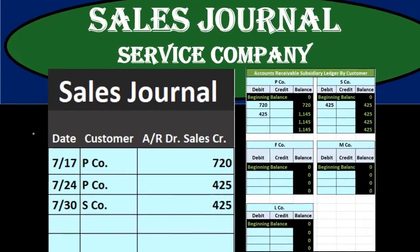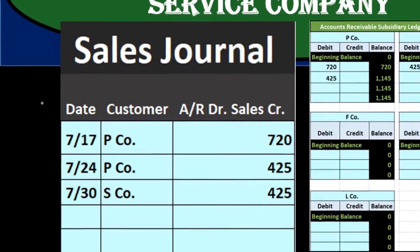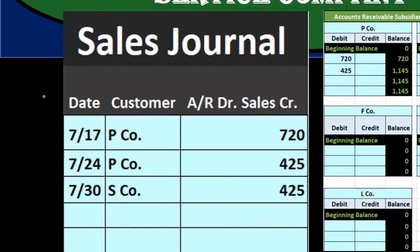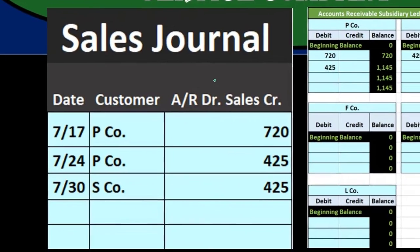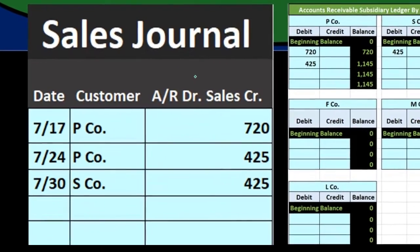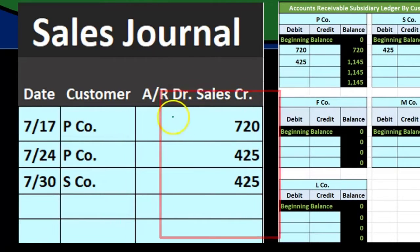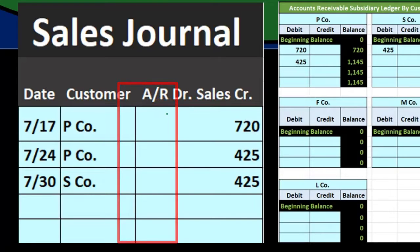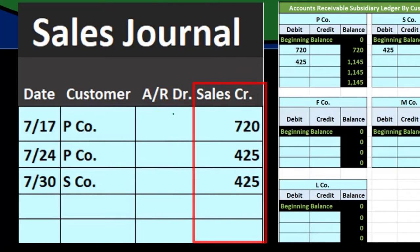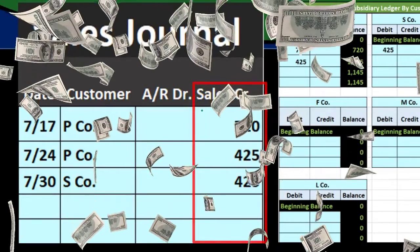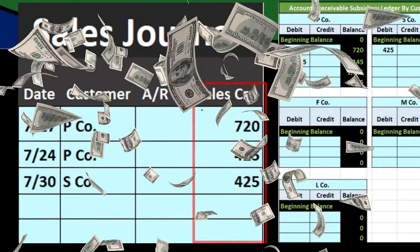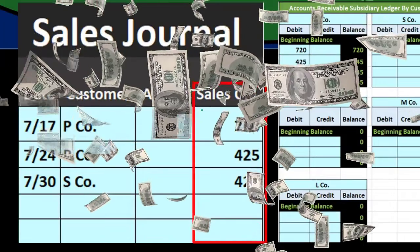This journal is the most specific type of journal we have, meaning we really can do this with just one column because it is so specific. It's when we make a sale on account, and we will use this one column to record both sides of the transaction — a debit to accounts receivable and a credit to sales. In our case, it's going to be revenue or income, but we'll keep the term sales because that's the typical term used with a sales journal.